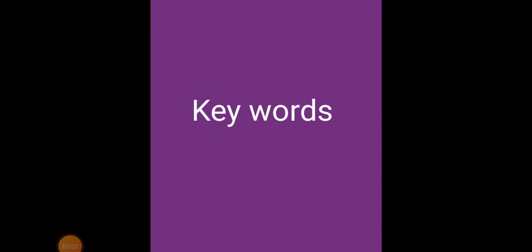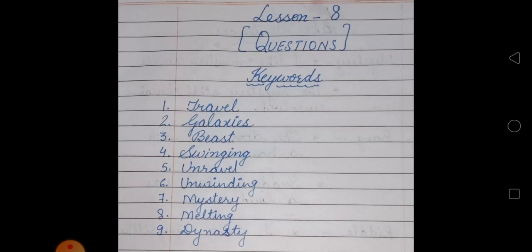Dear students, now let's start with the keywords of lesson number 8 questions. What is the first word? First word is travel. Spelling of travel is T-R-A-V-E-L.